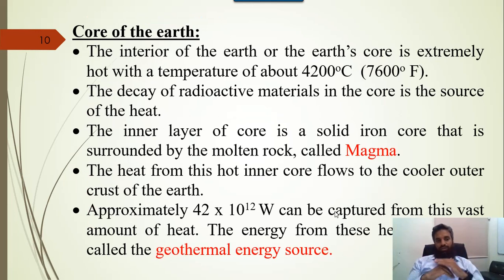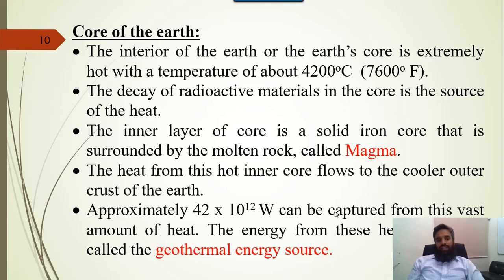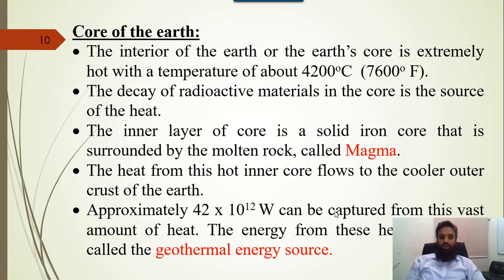Now we will discuss multiple parts of the earth. The major central part of the earth is the core. The earth's interior is extremely hot, with a temperature of approximately 4200 degrees centigrade or 7600 degrees Fahrenheit. The decay of radioactive material in the core is the source of heat. The inner layer is a solid iron core surrounded by molten rock known as magma. The heat from this hot inner core flows to the cooler outer crust. Approximately 42 × 10¹² watts can be captured from this vast amount of heat, which is called geothermal energy.